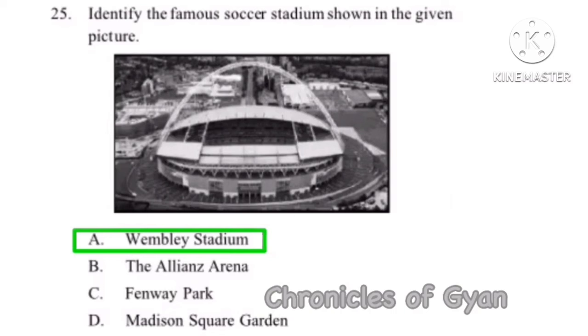Question 26: How many sports were featured in the Tokyo Olympics 2020? The correct option is Option A, 33.